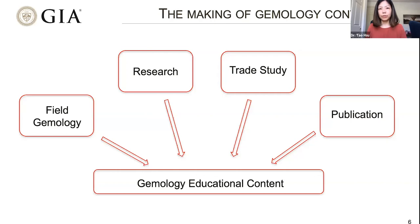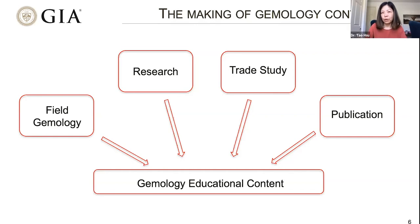These are the four major sources of our gemology course content. Research — in the strictly defined sense — is the lab research our research scientists do at GIA, actually at multiple locations. Field gemology is part of that research, and we have had a lot of collaboration between GIA Education and GIA Research to do field gemology. Another important aspect is the trade study. I like the language used in the promotion of this webinar: gemology is part science, part art, and part business.